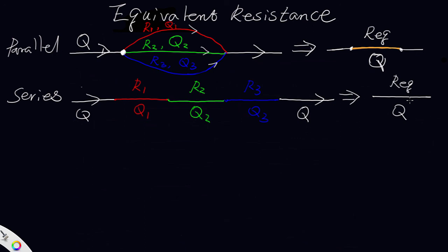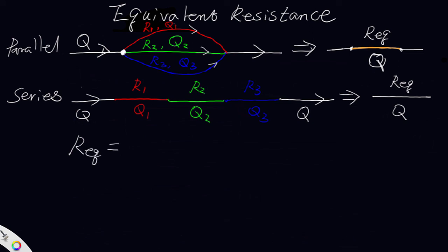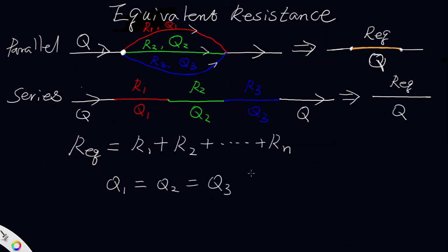It is important to know the equivalent resistance and quantity because we need the pressure drop in that airway or series of airways: P equals R times Q squared. For airways in series, the equivalent resistance equals R1 plus R2 plus ... plus Rn, and all flow quantities are equal: Q1 equals Q2 equals Q3 equals Qn equals Q.